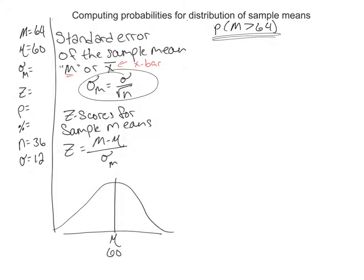So standard error is this symbol right here. You get standard deviation divided by square root of N. And then once you have that, you can put that number in the denominator part of your new Z formula.